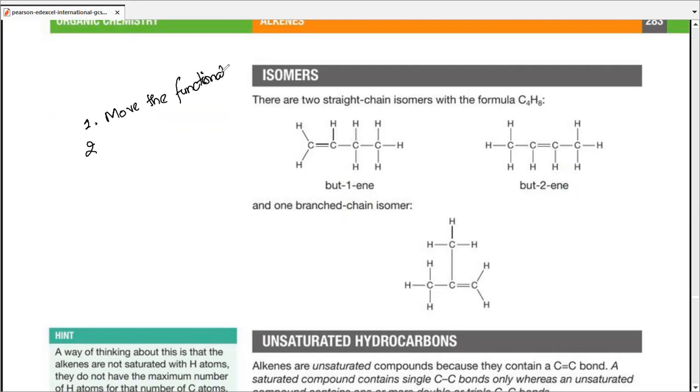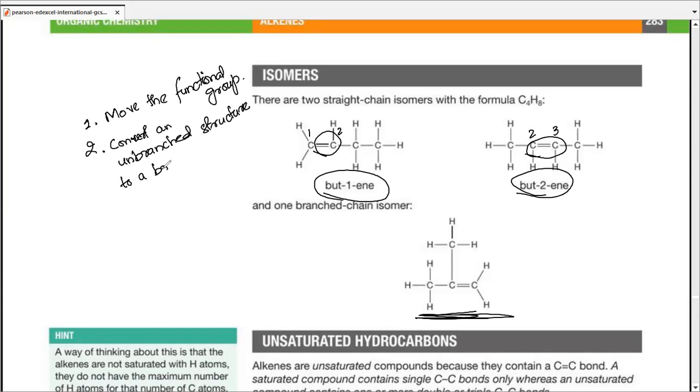Now, by functional group, I may mean an atom or group of atoms or anything like that. Here, specifically, I mean the double bond. If the double bond is present on first and second carbon atom, the compound is named differently and is an isomer to a compound where it is present on another set of carbon atoms and hence named differently. We've already been through this, so I hope you understand. The second way to make an isomer is to convert an unbranched structure to a branched one or vice versa, actually.